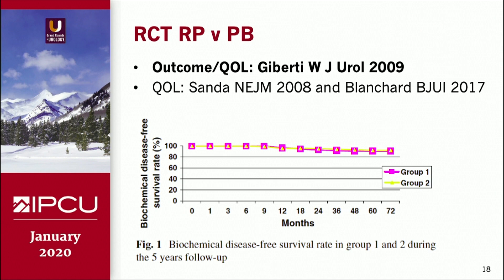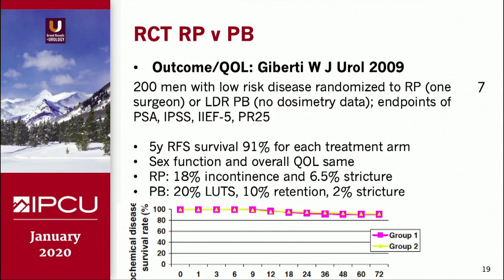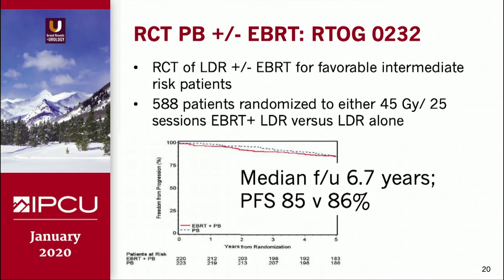Starting with surgery versus brachytherapy: this completed study published in 2009 shows Kaplan-Meier survival curves that are nearly identical long-term in low-risk patients. The PSA outcome is identical and sexual function and overall quality of life appear the same. However, prostate brachytherapy has issues: 20% LUTS, 10% retention, and 2% stricture rate in this prospective randomized study — things we have to address.